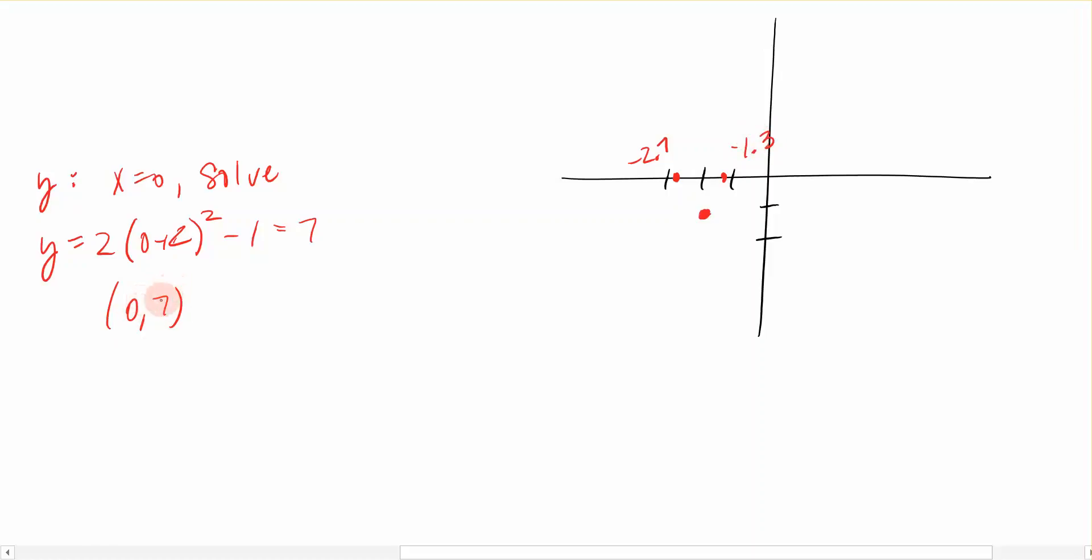Now the other point that I solved for was the y-intercept, which means that we're crossing the y-axis over here at 7. So I'm just going to come up here, we'll just call this 7 at the top, and I know that I am crossing the graph right here. So when I sketch this, these are the only four points that technically I need to have to be able to sketch it.